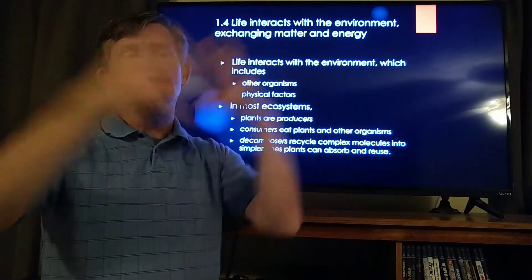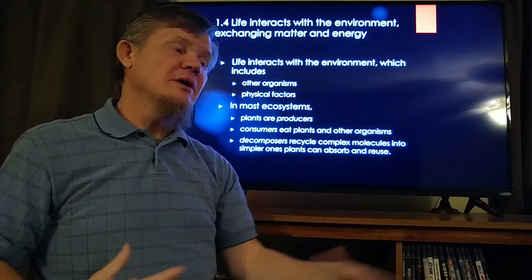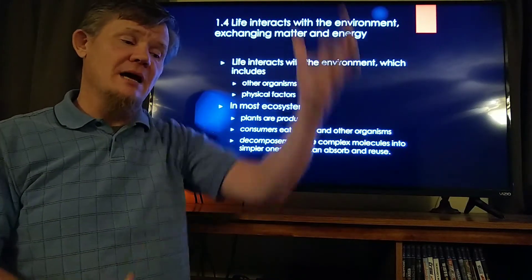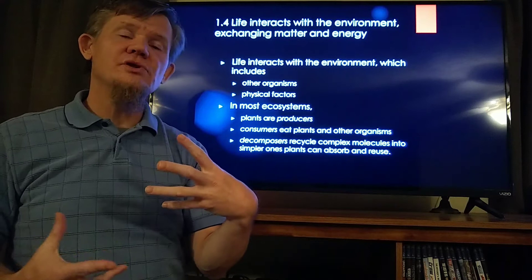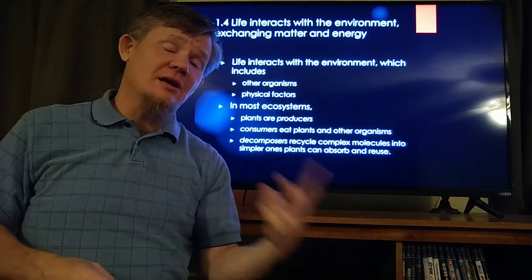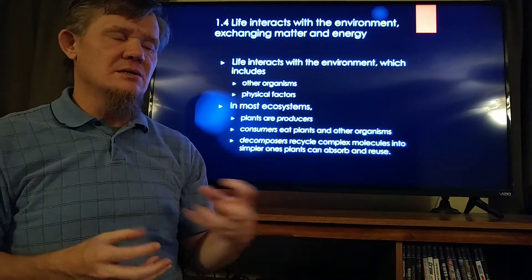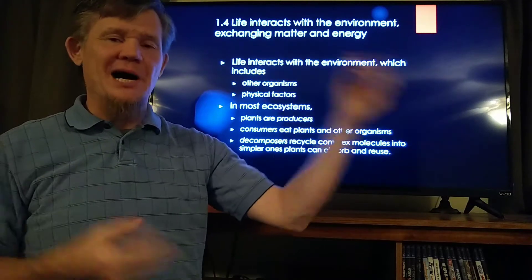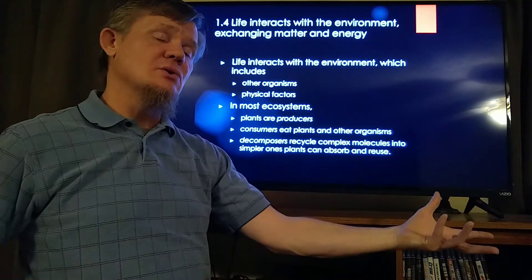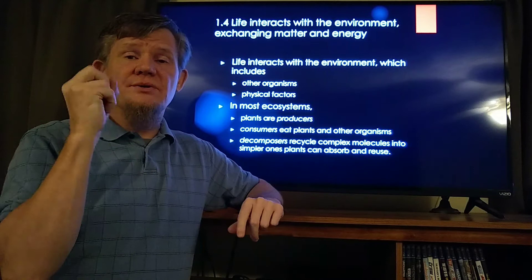Now imagine a tree lives its whole life and never gets eaten by an animal. That tree falls over. A bunch of nutrients, vitamins, and molecules are now trapped within the body of that tree. For those molecules to be recycled, the body has to be broken down. So the second group every ecosystem needs is a decomposer. Decomposers are recyclers — they break down the dead bodies of formerly living things to recycle those nutrients back into the soil.